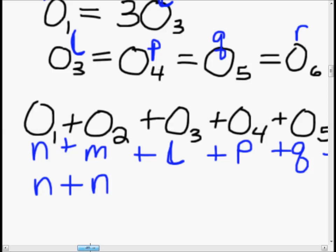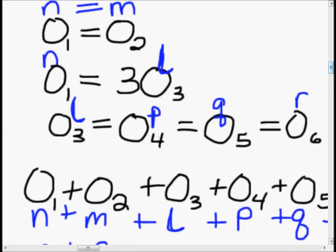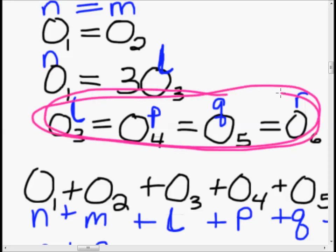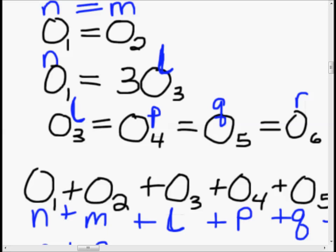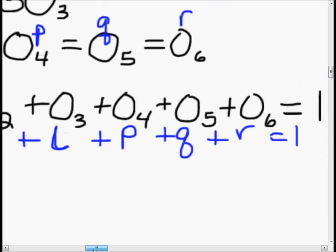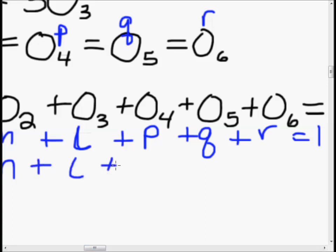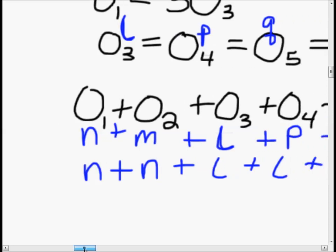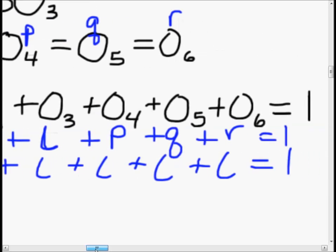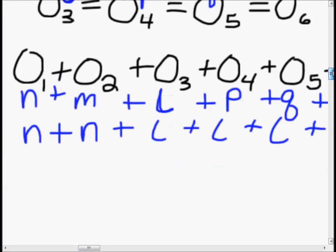Now let's look at the other relationship: L equals P equals Q equals R. Since all four of these are equal, we can replace P, Q, and R with L. So our equation becomes N plus N plus L plus L plus L plus L equals 1. We've simplified down to just two variables.